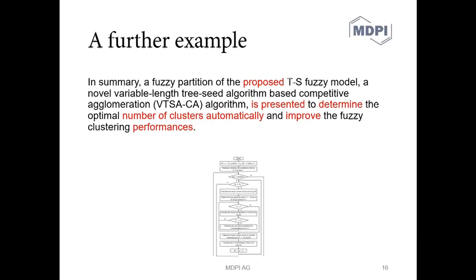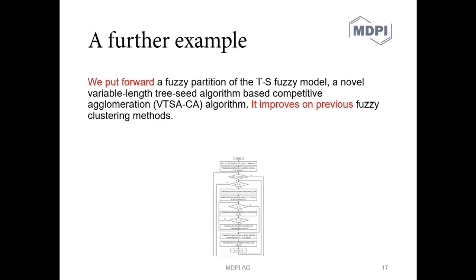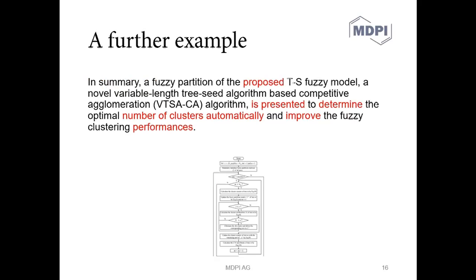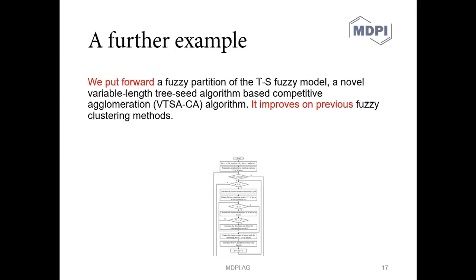So here's how I re-edited this sentence. So instead of proposing I'm going to put forward. You might think this is a little bit informal for scientific writing but it's something that paints a picture in the reader's mind and that they can really visualize something being proposed in this way. So we put forward a fuzzy partition of the TS fuzzy model, a novel variable length tree seed algorithm based competitive agglomeration algorithm. And then you really want to say is it improves on fuzzy clustering methods. So rather than this, you know, it's presented to determine the optimal number of clusters automatically and improve the blah blah, we can just say it improves on fuzzy clustering methods. Let's say something really simple, put it in one sentence that's separate from the previous sentence and hopefully it's now a lot more easy to understand.